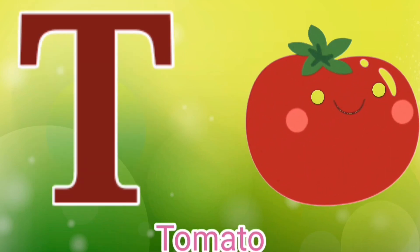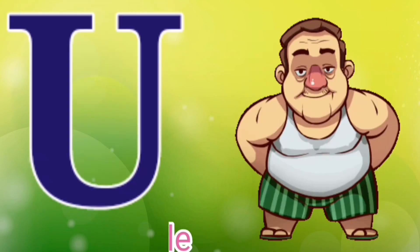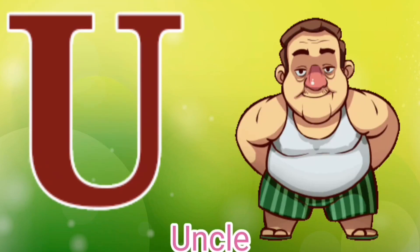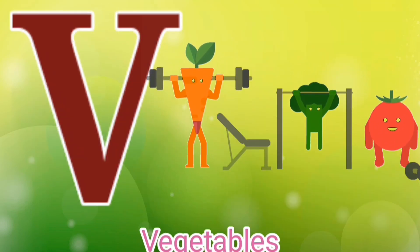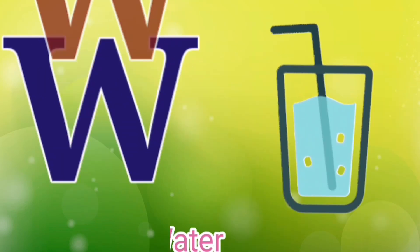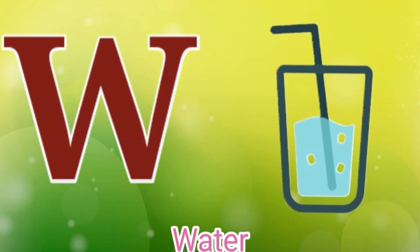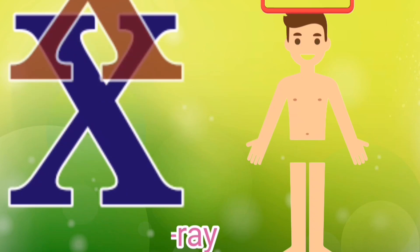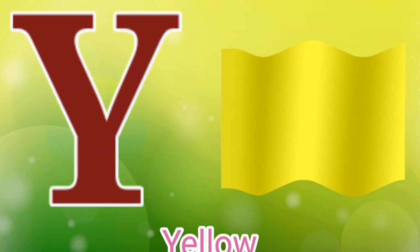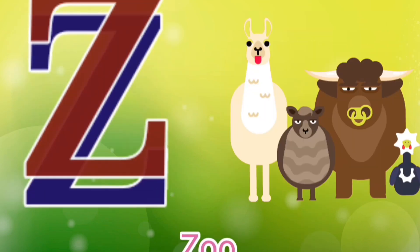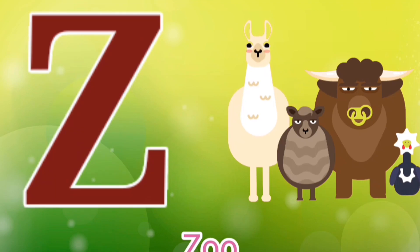S for Sunglasses, T for Tomato, U for Uncle, V for Vegetable, W for Water, X for X-Ray, Y for Yellow, Z for Zoo.